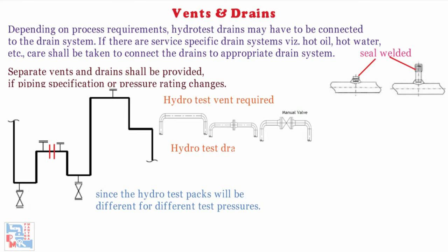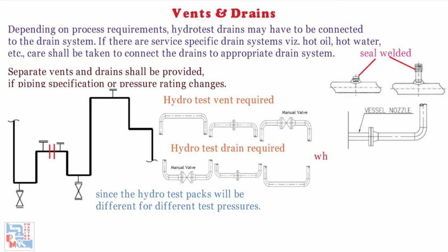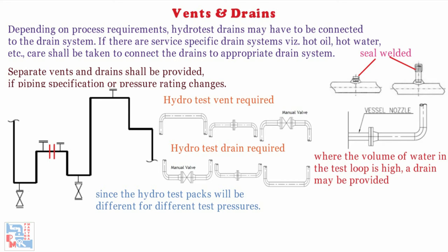On your screens you can see images. In such cases where the volume of water in the test loop is high, the drain may be provided so that the hydrotest water can be taken to disposal or reuse through this connection — for example, a flare header where a high volume of hydrotest water is required for hydrotesting.